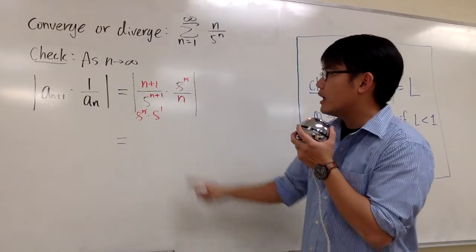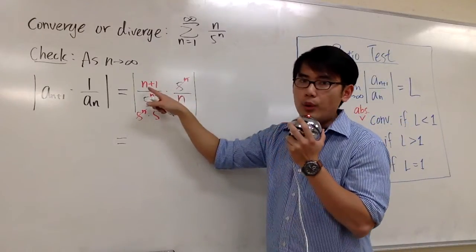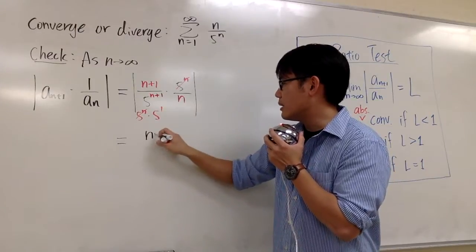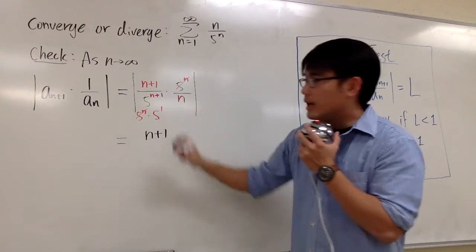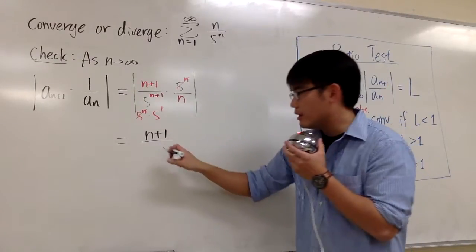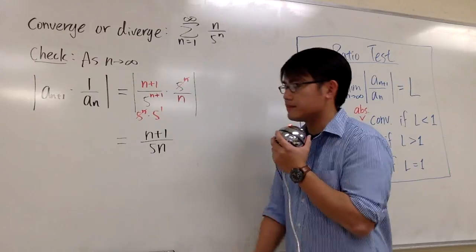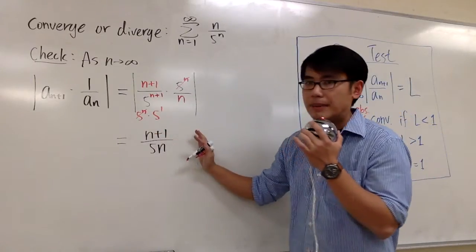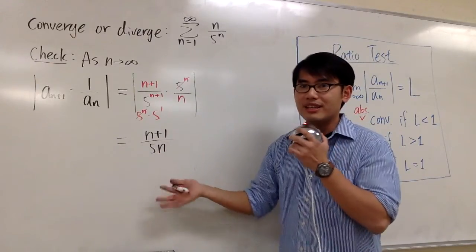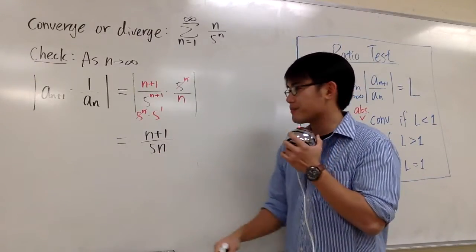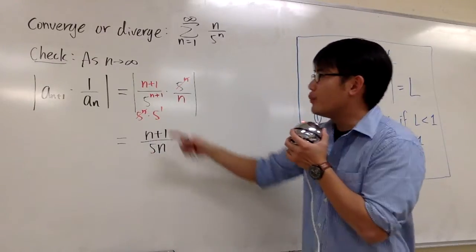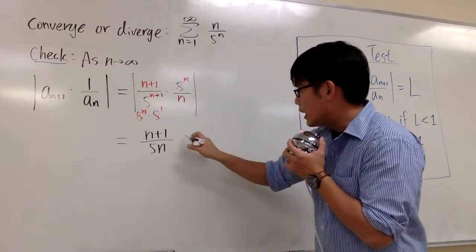I will do more algebra right here. On the top, all we have left is just the n plus 1. On the denominator, we have phi to the first, which is phi, and then multiply by n, so I'll put down phi n. I'm going to lose the absolute value because the expression inside is always positive anyways. The absolute value doesn't matter anymore. Now this is the most we can do to simplify the expression, and we're going to take the limits now. So I will draw arrow instead.